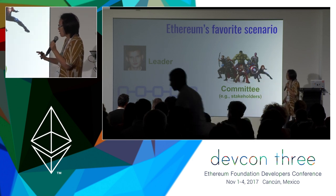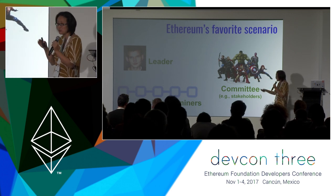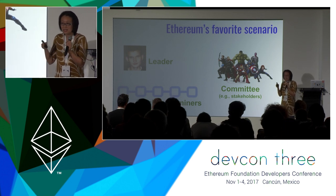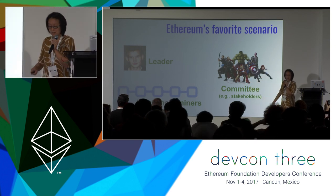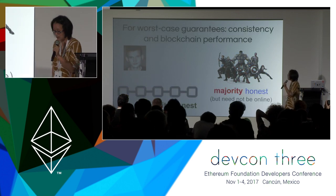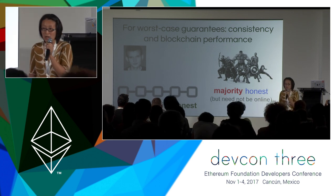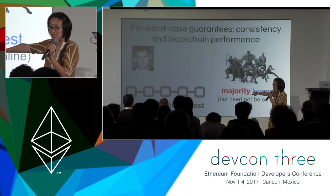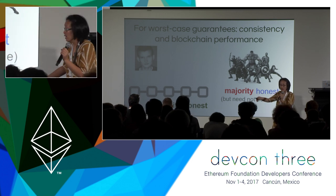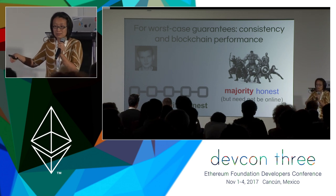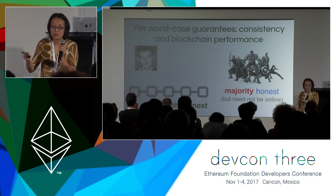I'm not going to mention how to elect the committee and elect the leader — that's outside the scope of this talk. But assume there exist mechanisms to elect the committee and leader from the miners and stakeholders. We assume a majority of the miners are honest, and for the committee we also assume that a majority of them are honest, but they don't have to be online — if the entire committee is offline it's not the end of the world, because you can always fall back to the blockchain.